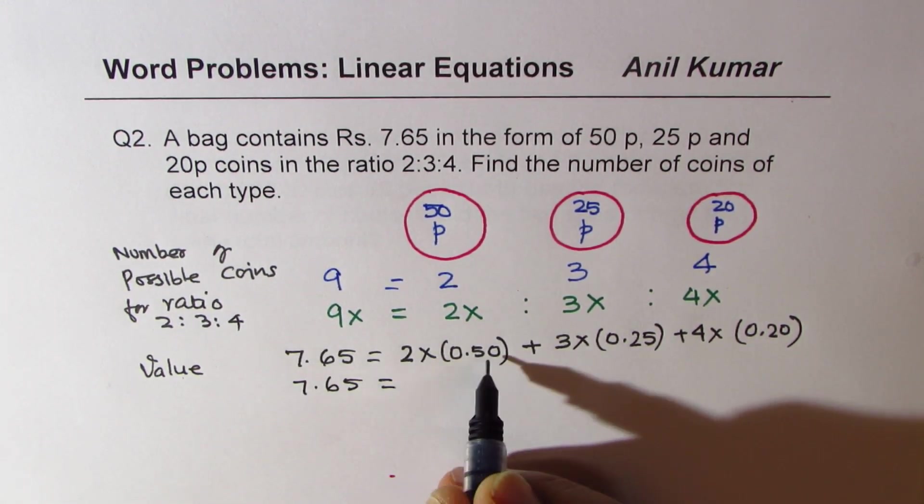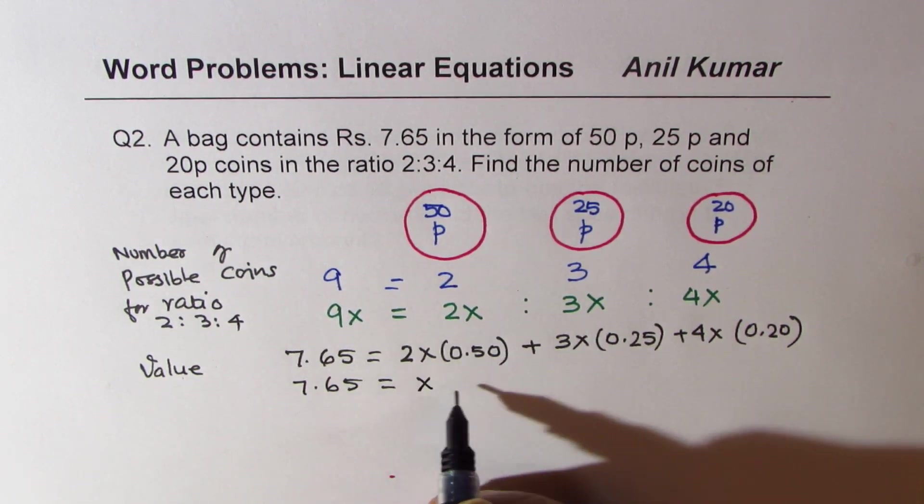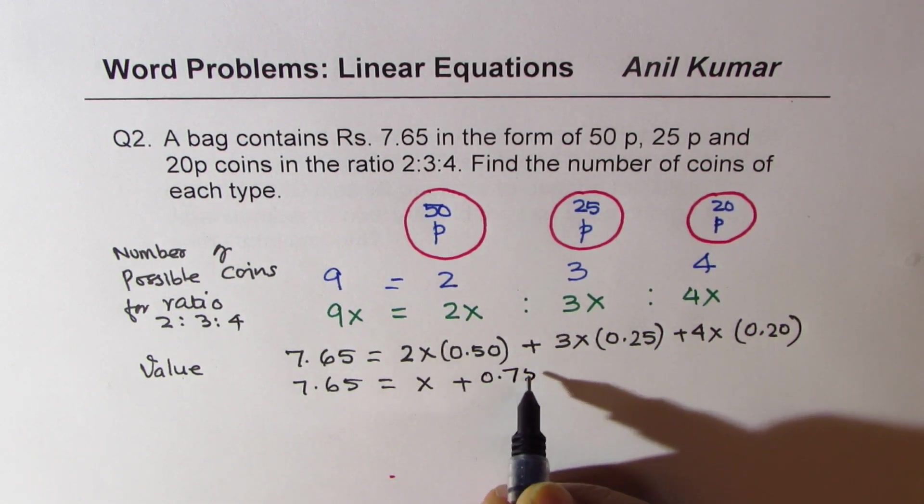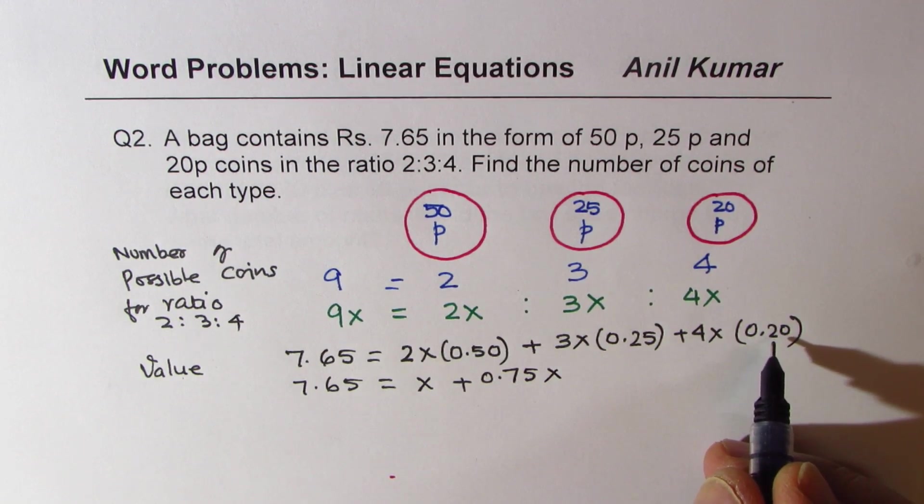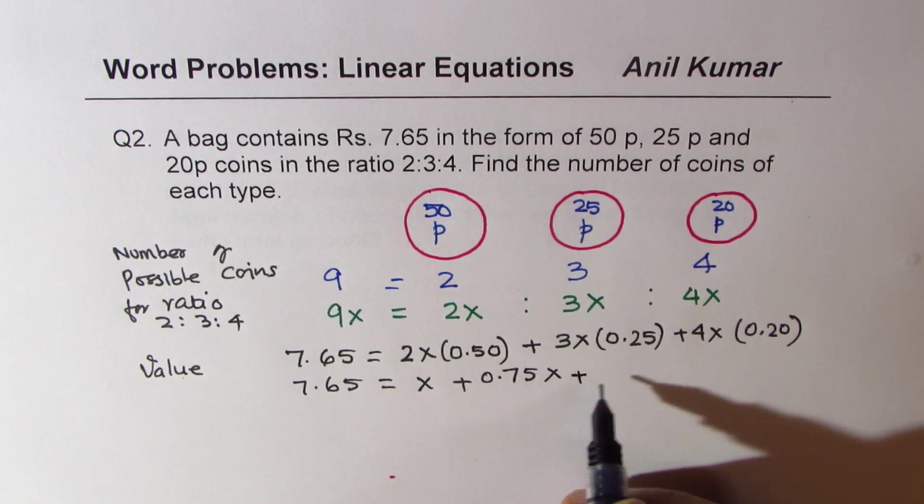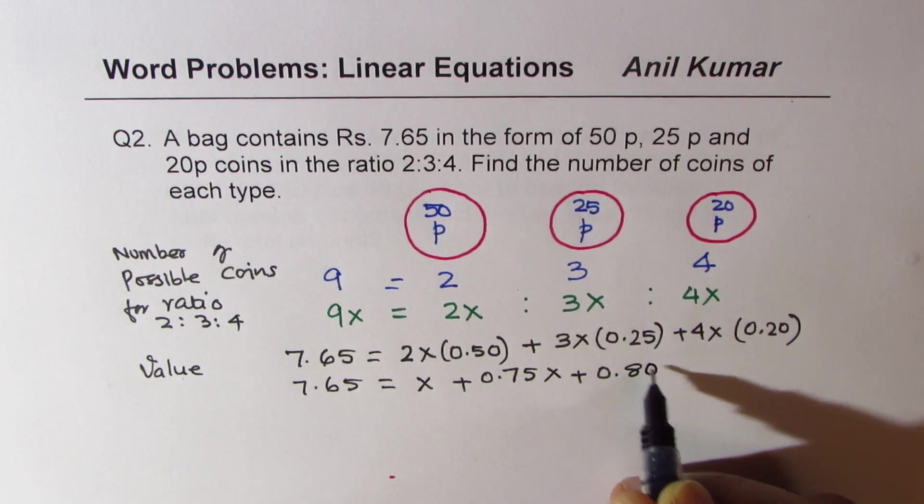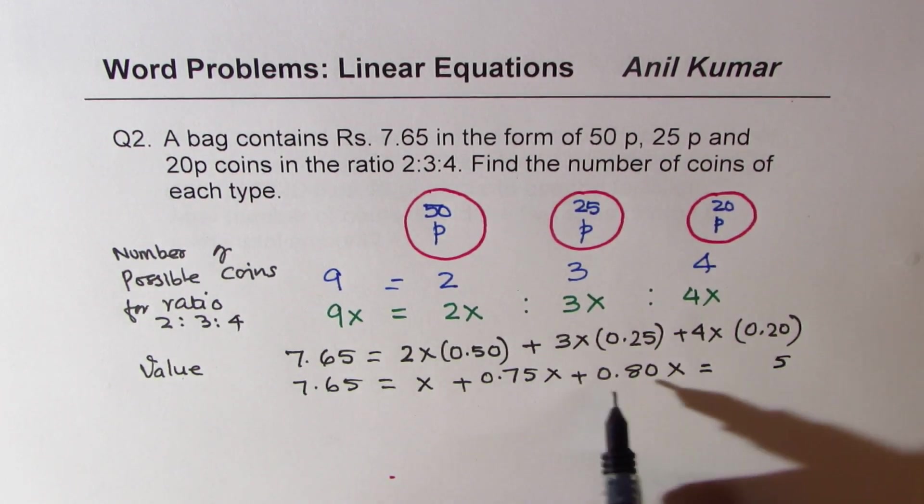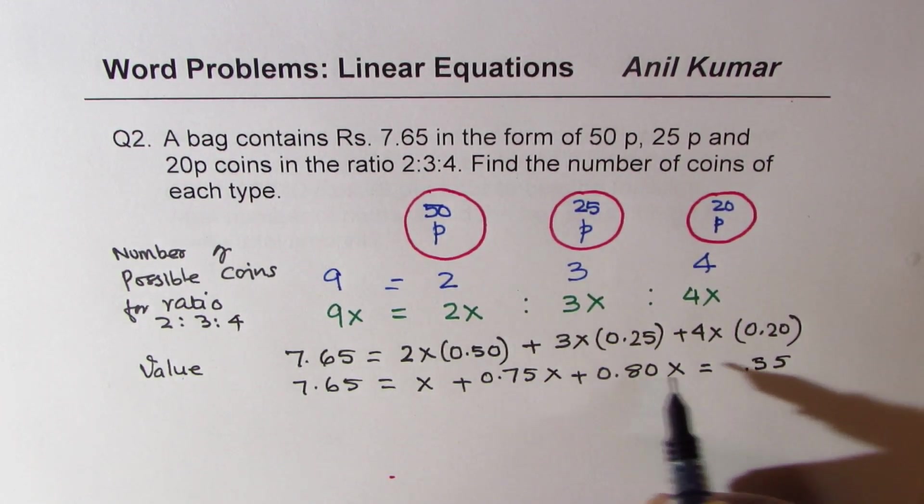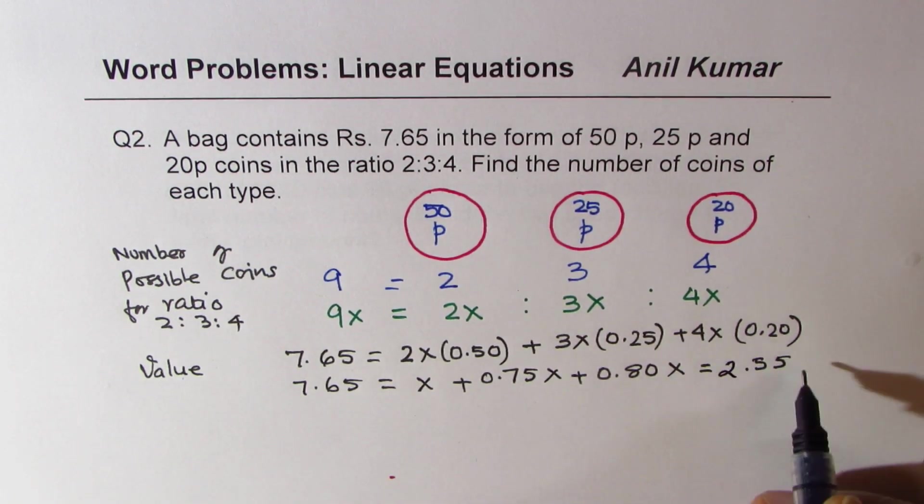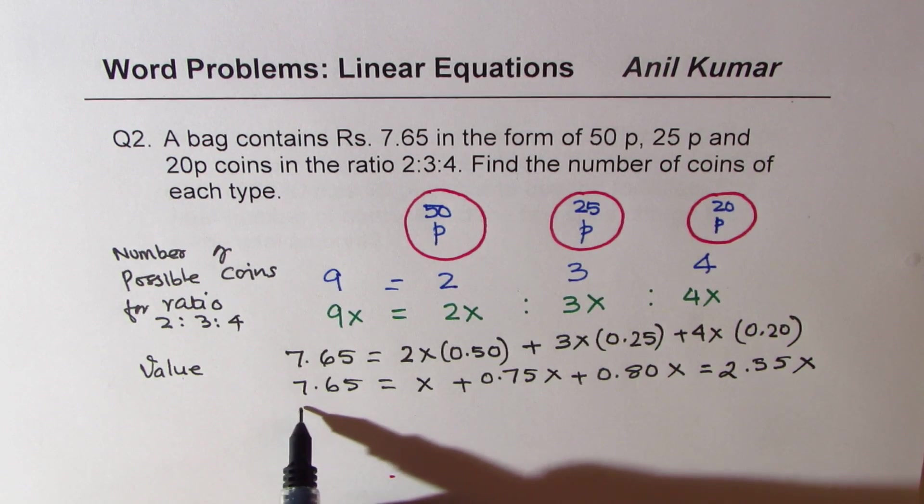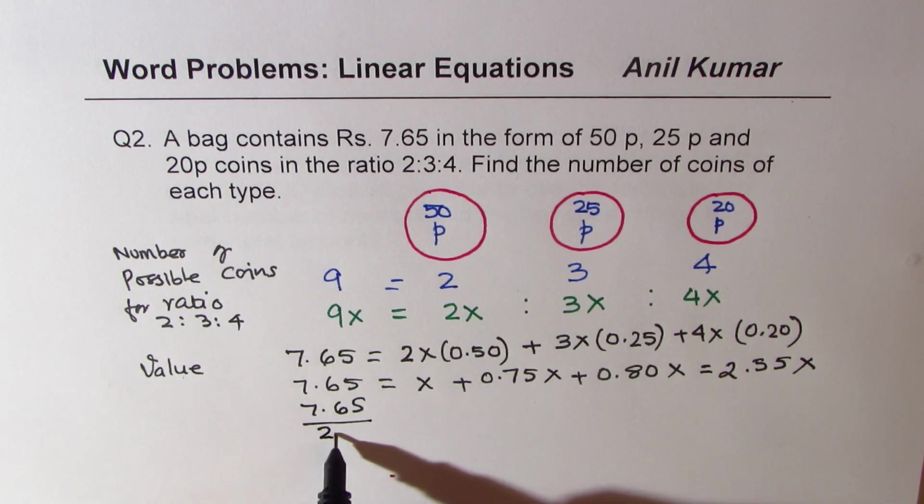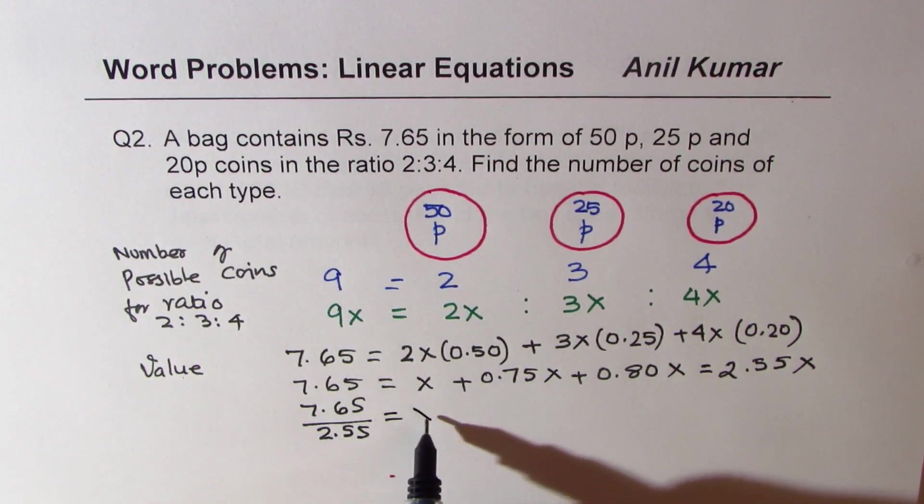You could calculate this. So 7.65 equals, twice 0.5 is 1, so we get just 1x, plus 3 times 0.25, 0.75x, and 0.20 times 4, 0.80x. Adding them all, you get 2.55x. So x is 7.65 divided by 2.55. That is the value of x.